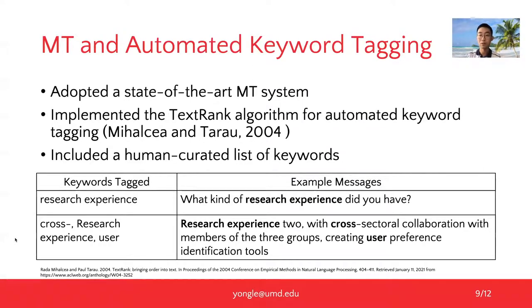For the machine translation system and keyword tagging techniques, we used a state-of-the-art MT system. We applied the TextRank algorithm to score the importance of a word based on how it related to other words in the given document. We also included a human-selected list to improve keyword coverage. In our formal study, only 6 out of 56 keywords are from the human-generated list.